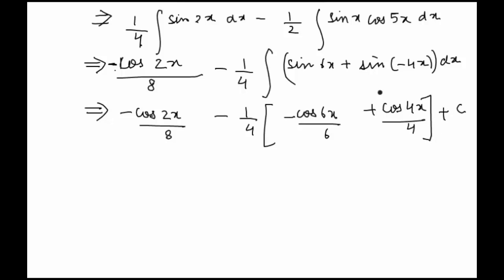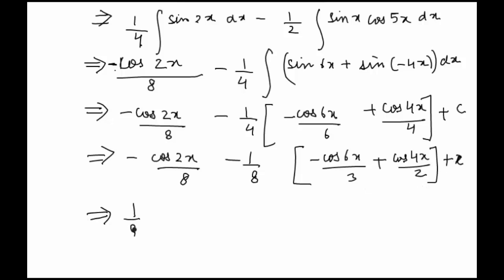This gives us minus cos 2x by 8 minus 1 by 8, we take the 2 common, we get minus cos 6x by 3 plus cos of 4x by 2 plus c. We can take the 1 by 8 common from the entire thing: 1 by 8 times minus cos 2x plus cos of 6x by 3 minus cos of 4x by 2. This will be the solution.